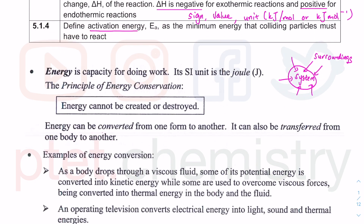Last but not least, we need to define activation energy, Ea. This is a very important definition related to the rate of reaction topic. Activation energy is the minimum energy the colliding — or reacting — particles must have before a reaction can occur. Just because you collide does not mean you will react, because you might not have enough energy. The reacting particles must have this minimum amount of energy to overcome the barrier before they can undergo a reaction.